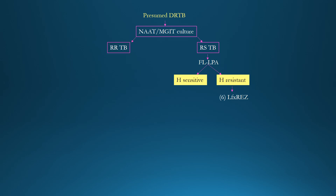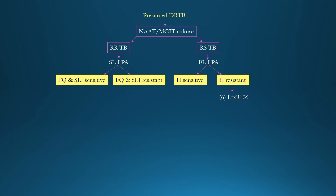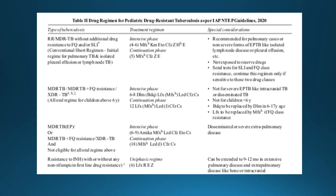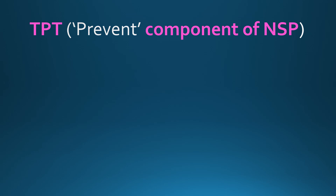For rifampicin-resistant tuberculosis, subject the patient to second-line line probe assay before planning second-line drugs. After SL-LPA, the patient may have fluoroquinolone and second-line injectable sensitive TB, in which case both drug classes can be used, or fluoroquinolone and second-line injectable resistant TB, requiring other drug combinations. These treatment regimens for drug-resistant tuberculosis are taken from the IAP guidelines.